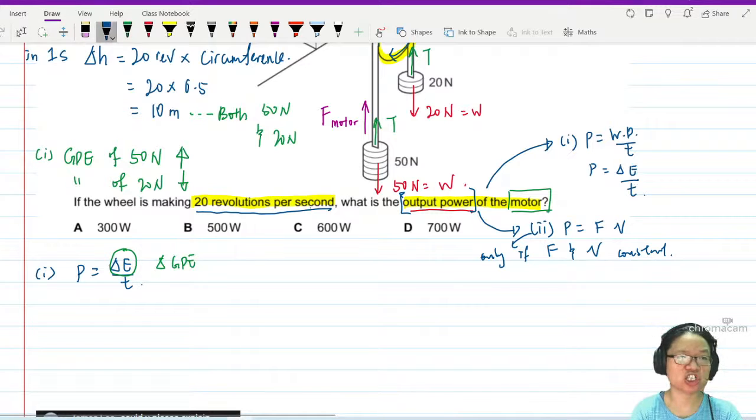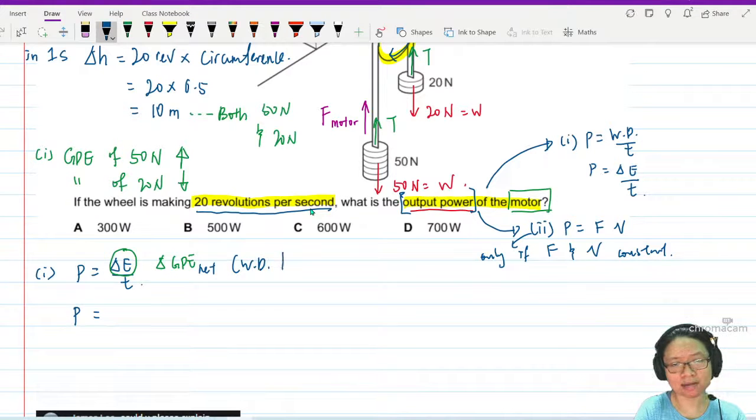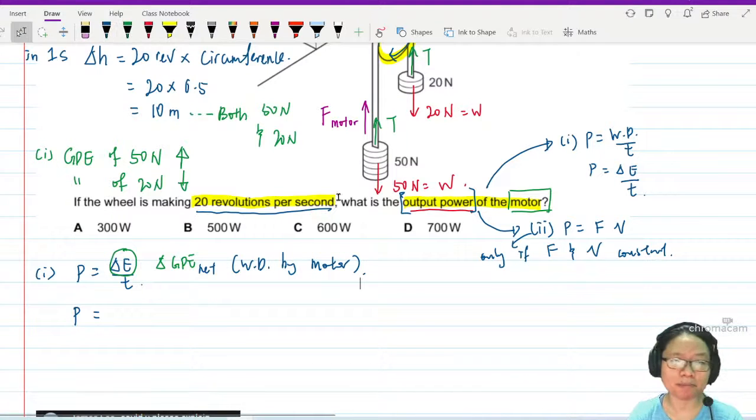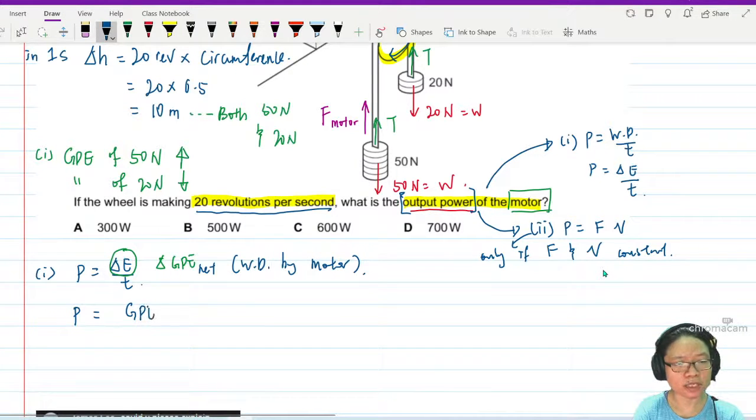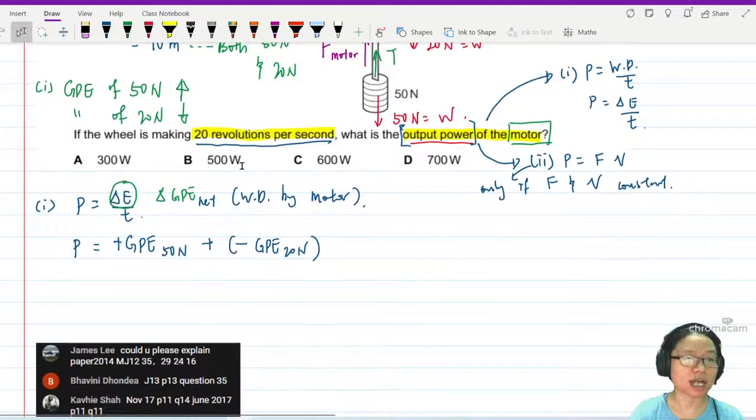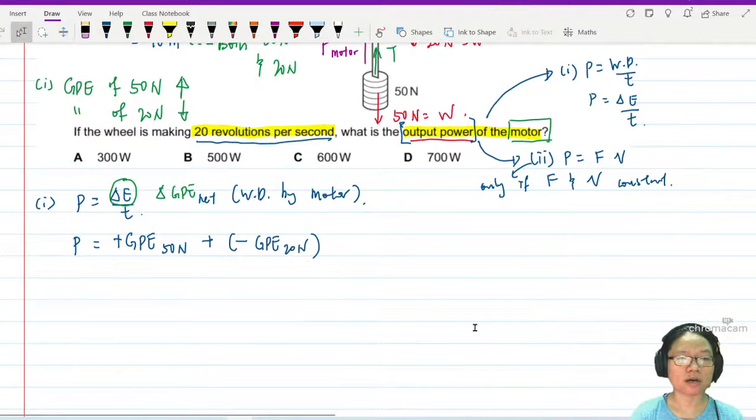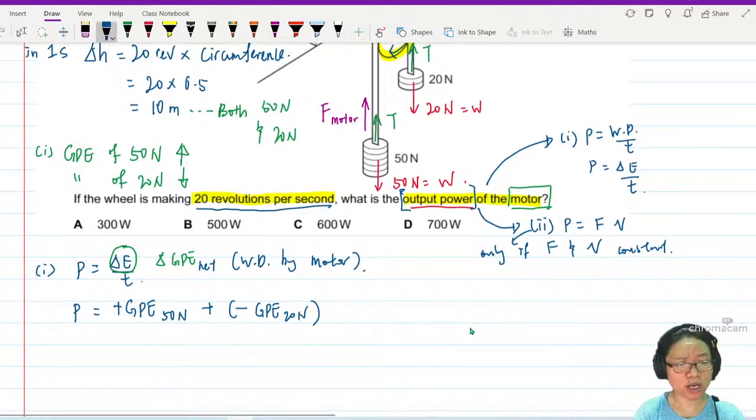So you need to find the net change, not just the change of any one of them, net change. Because the extra missing work is the work that is done by the motor. So the net change in GPE, which is also work done by the motor. So the motor does the work to make up for the difference in net change in GPE. I find out, so I will take GPE of 50 Newton. This will be a plus, plus negative, the change in GPE of 20 Newton.